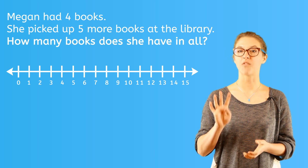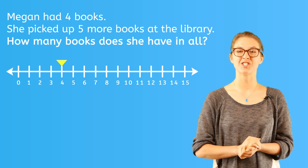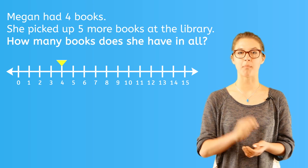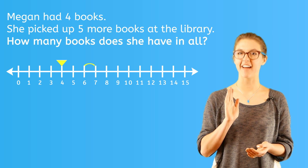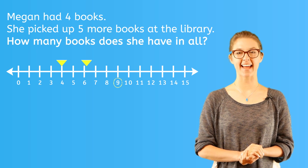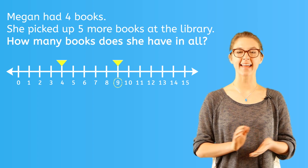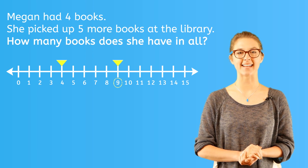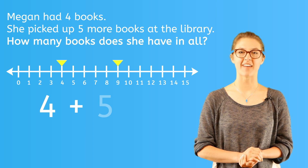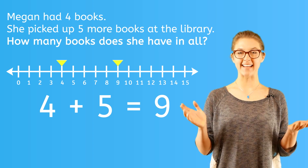Megan has four books, so we'll start at the number four. She then adds five more books, so we'll jump one, two, three, four, five spots and land here at number nine. And that's how many books Megan has in all. Four plus five equals nine. We're right.